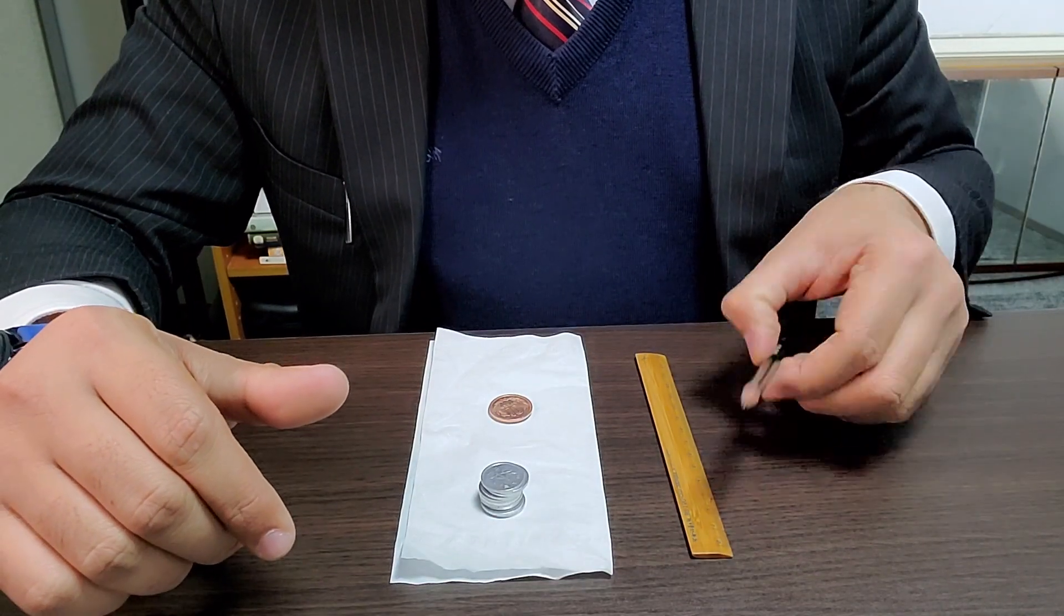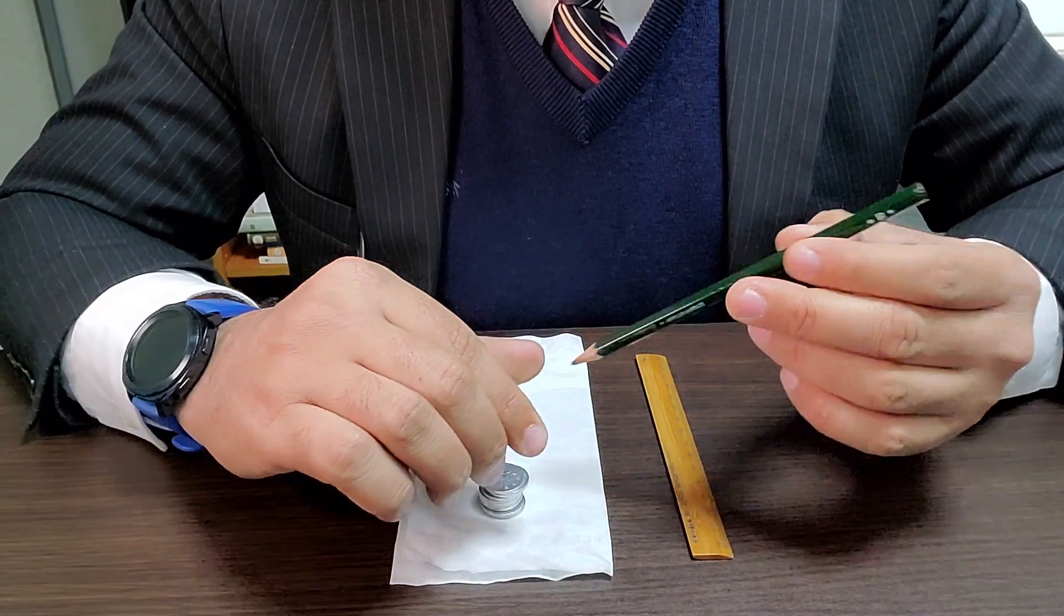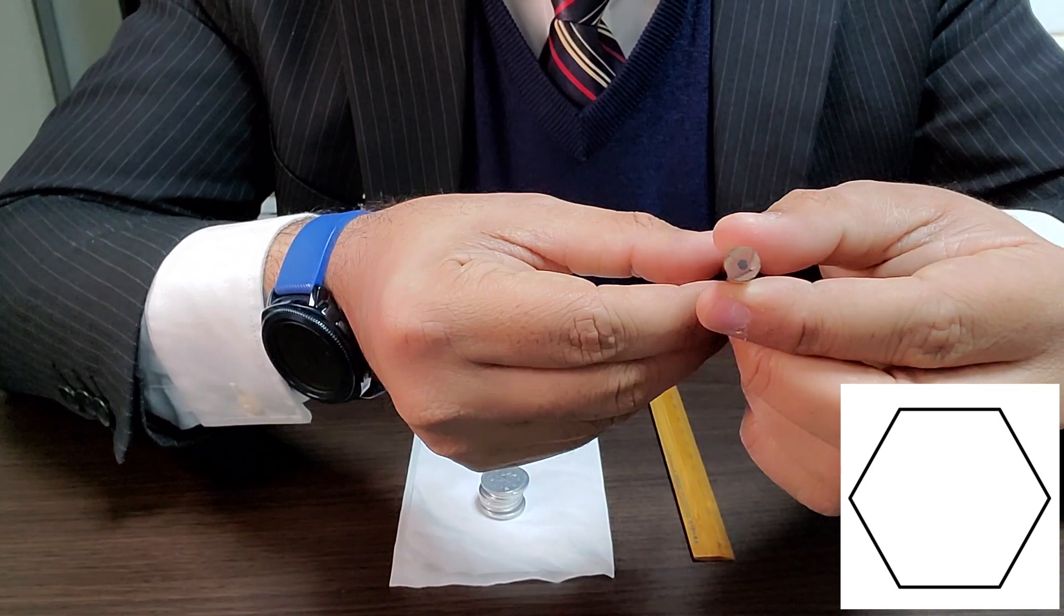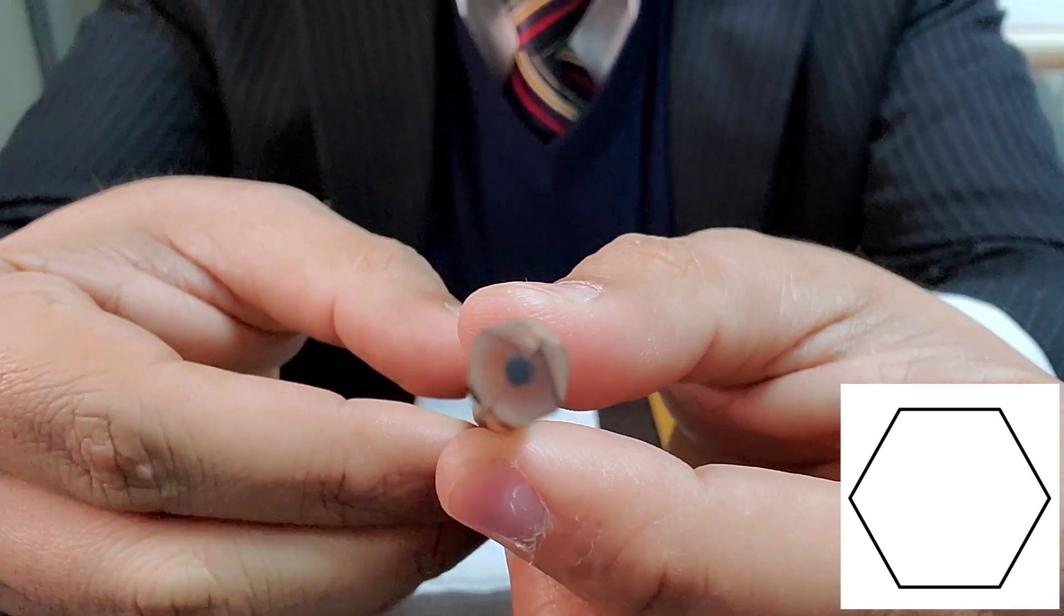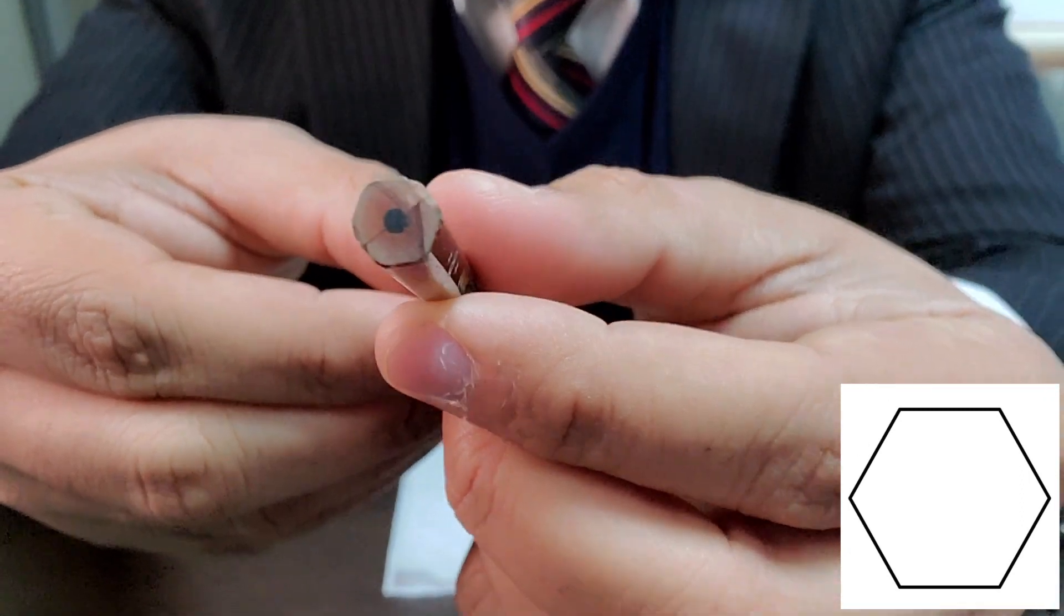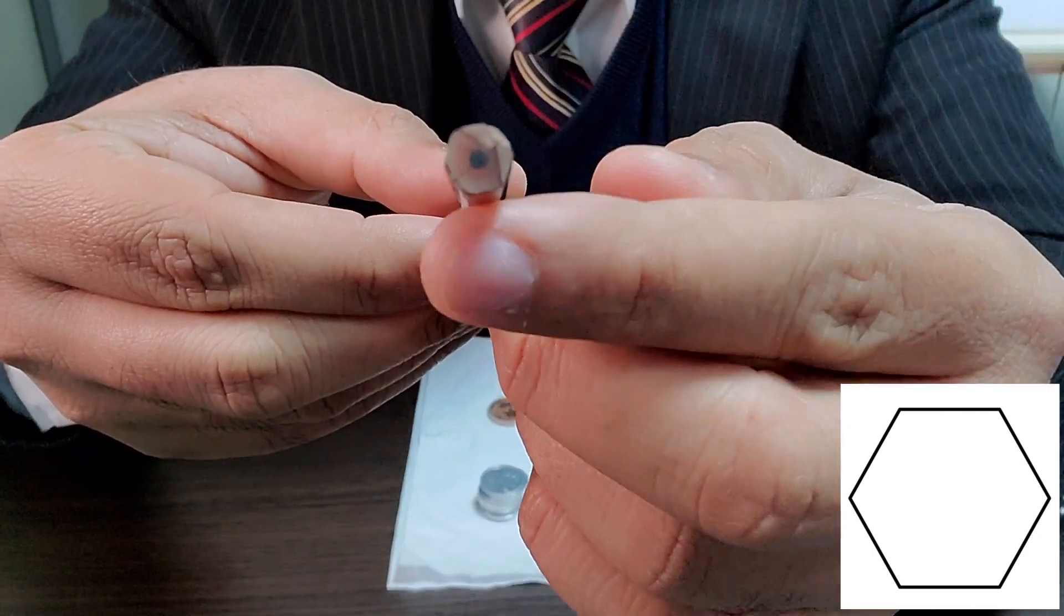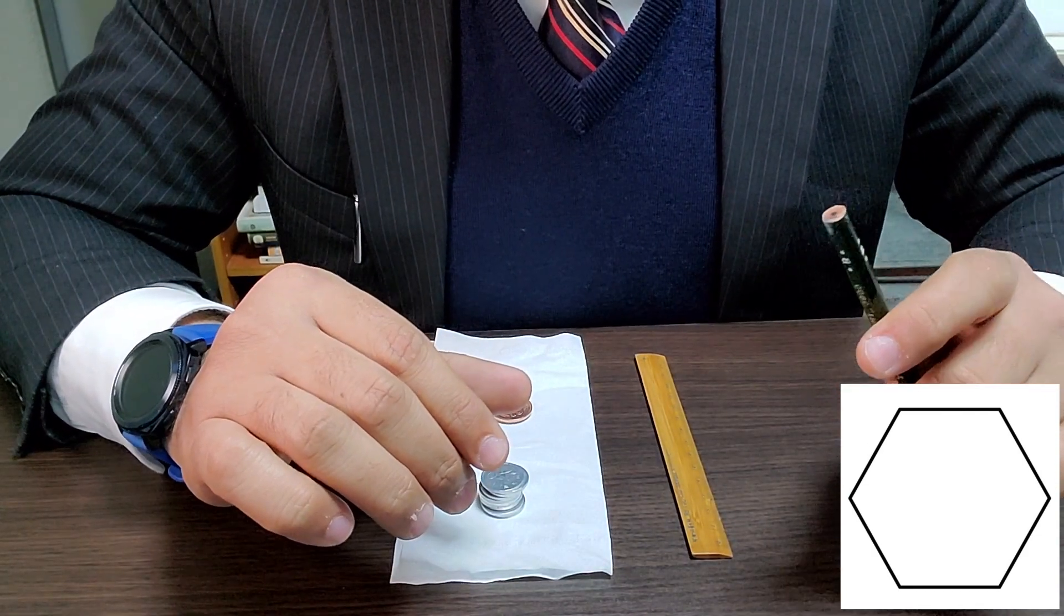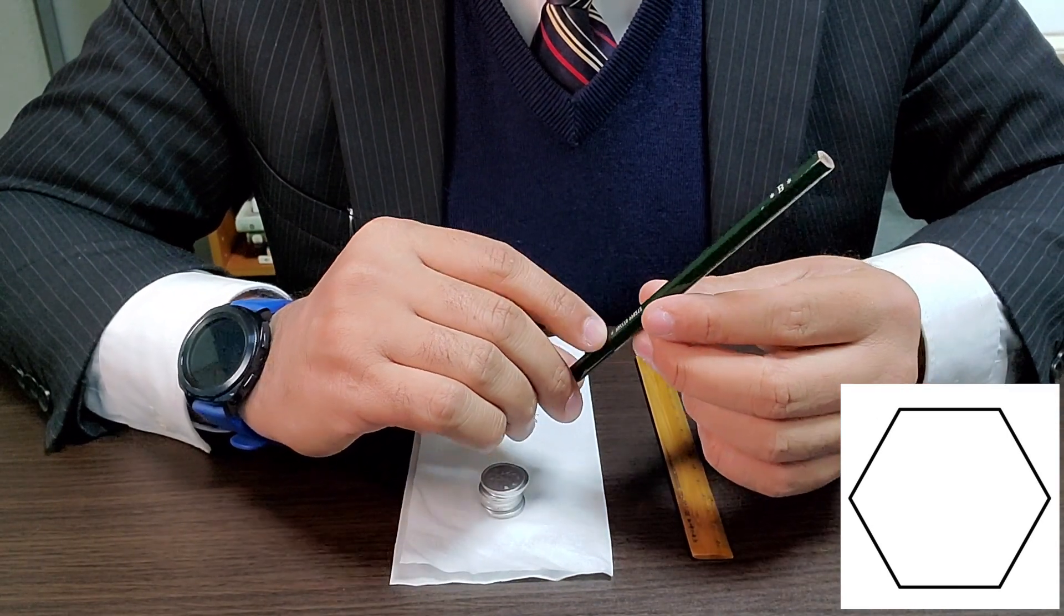So first, we need a pencil. Like this. Now this pencil is hexagonal, which means it has six sides. Let's see if I can show you from a closer point of view. And a pencil that has six sides is called a hexagonal pencil. Hex in Greek means six. Most pencils are hexagonal in shape.